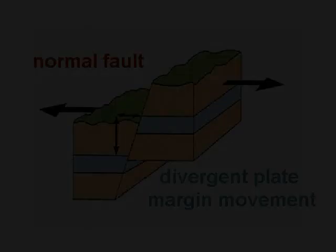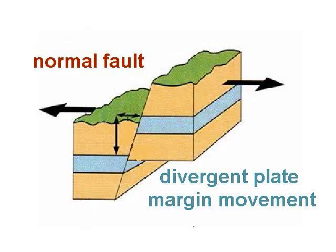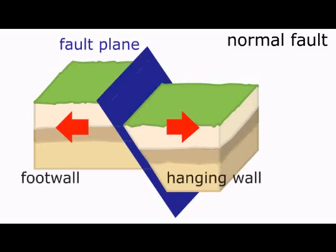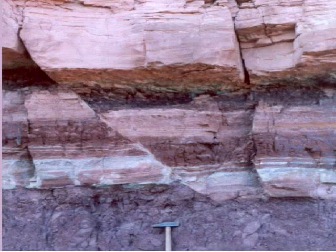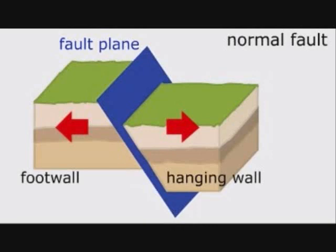A normal fault is caused by divergent plate margin movement. Remember, divergent means pulling apart. You might also hear words like extension or tension, but they all mean divergent. These faults can range in size from a few centimeters to many kilometers. In a normal fault, the hanging wall goes down. Its fault plane cuts through the hanging wall and the foot wall at the dip angle. Here you can see they are whitened to illustrate their heave and throw movements.